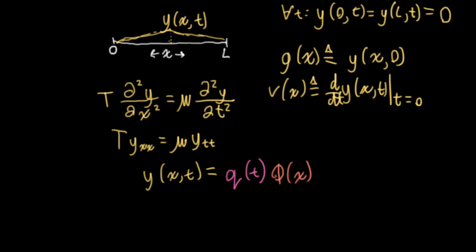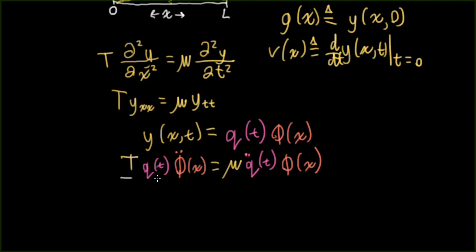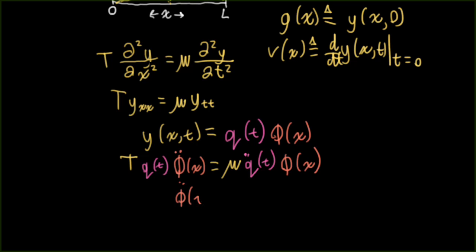We take this candidate solution for y and plug it into both sides of our PDE. On the left, we have T, and q(t) just hangs out as a constant with respect to x, then we have the double derivative of phi with respect to x, which I'll write as phi double-dot. On the right, we have mu, and q-double-dot of t representing the double derivative with respect to time, while the phi function hangs out as a constant. Now let me divide both sides by T, q, and phi — giving phi-double-dot(x) over phi(x) on the left, and mu over T times q-double-dot(t) over q(t) on the right.